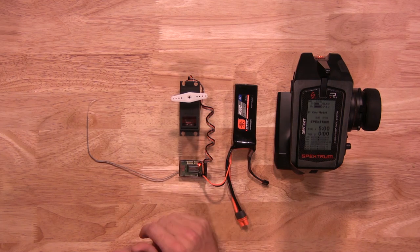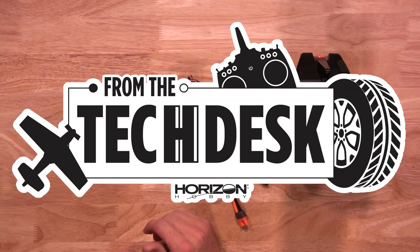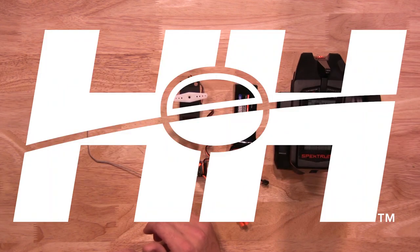Well there you go. That's how quick and easy it is to bind your DX5 series radio to an AVC receiver that has auto calibration. Thanks again for watching these tips, tricks, and videos from the RC experts.